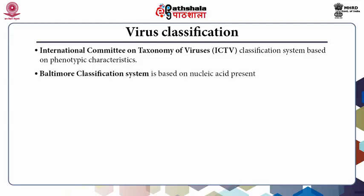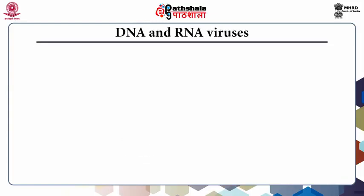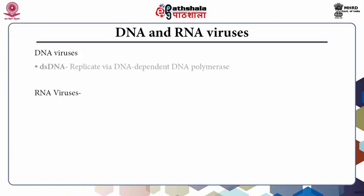The Baltimore classification system is based on the nucleic acid present — it could be a DNA virus or RNA virus, single-stranded or double-stranded. Based on the nucleic acid material, viruses are classified into two classes: DNA viruses and RNA viruses. DNA viruses are further classified as double-stranded DNA viruses, which replicate via DNA-dependent DNA polymerase.